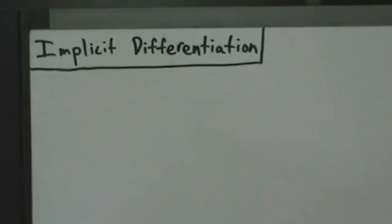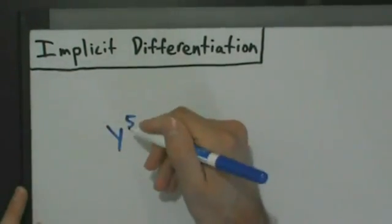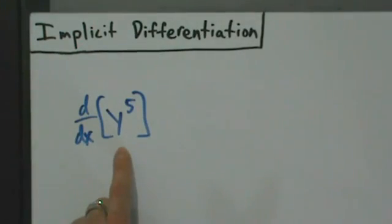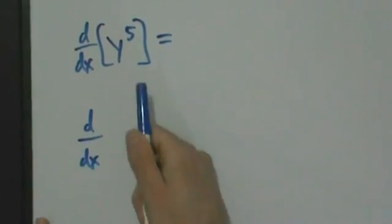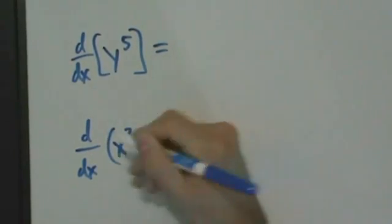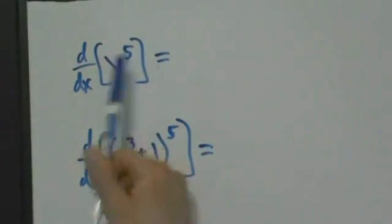Implicit differentiation is actually pretty much just the chain rule. Let's say, for example, we have y to the fifth, and we want to differentiate that with respect to x. All we know is that y is a function of x. Before we do this, let's look at a specific example we're already used to. Let's say we want to differentiate x cubed plus 1 to the fifth.